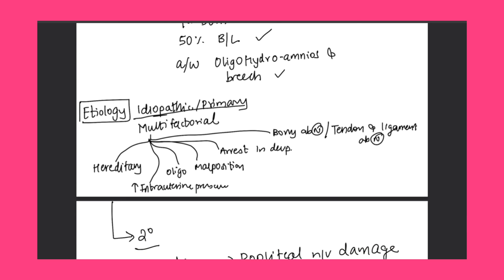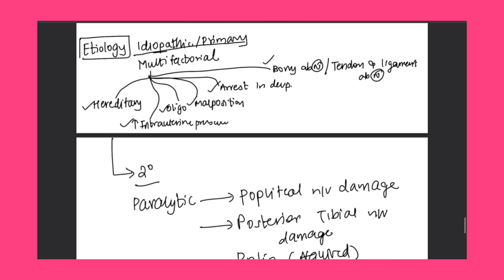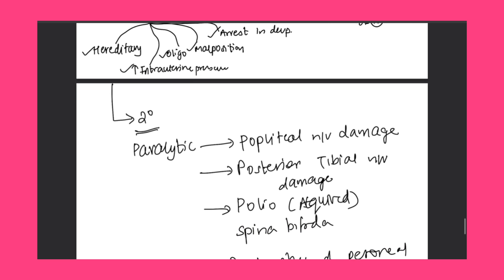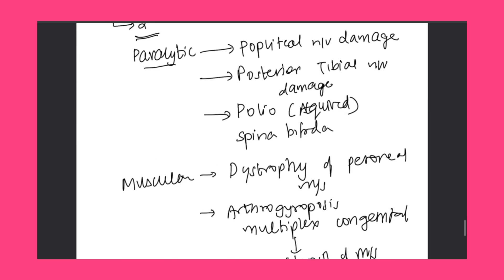Etiology — primary and secondary. Primary is idiopathic, that is multifactorial; there is no conclusive etiology but proposed causes include: hereditary factors, increased intrauterine pressure, oligohydramnios, malposition, arrest in development, bony abnormality, and tendon and ligament abnormality. So basically it is a multifactorial condition.